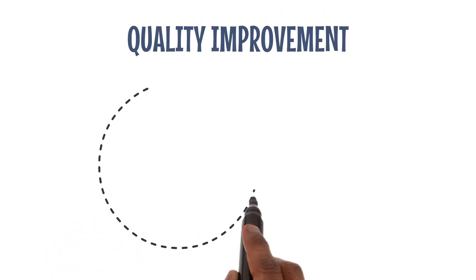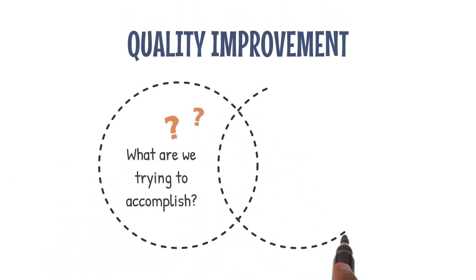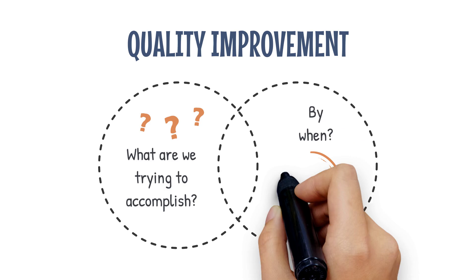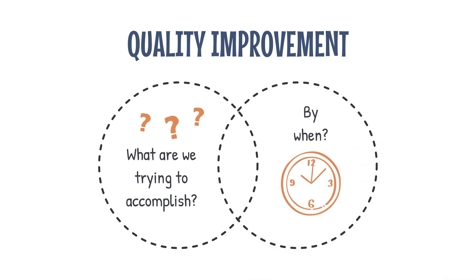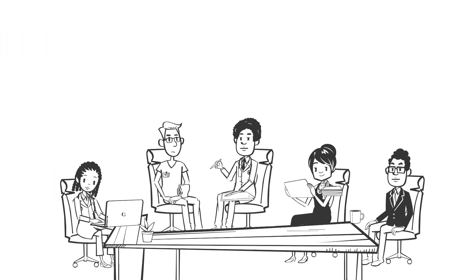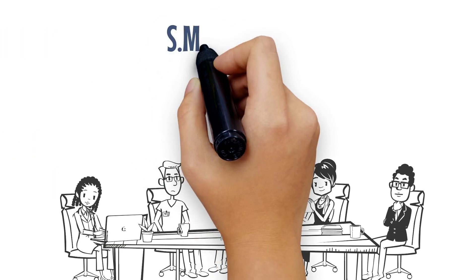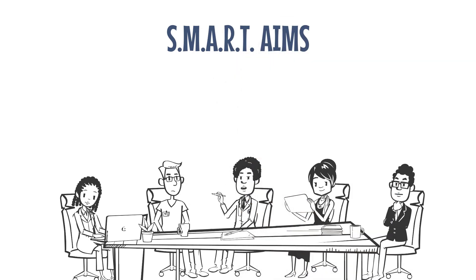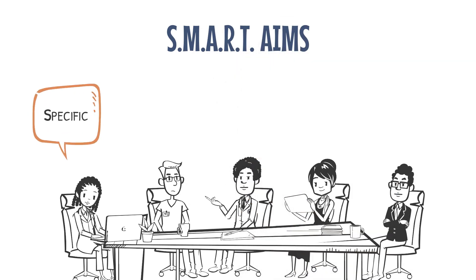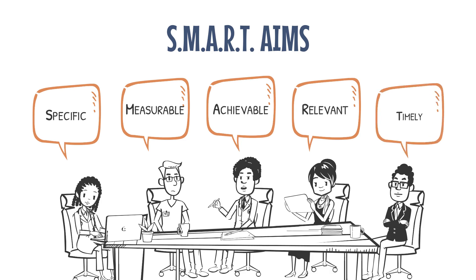All improvement requires setting an aim that defines what you're trying to accomplish and by when. It is best to make sure that we are SMART with our aims. A SMART aim or goal is specific, measurable, achievable, relevant, and timely. Let's break down the components that make an aim SMART.